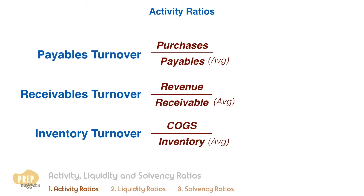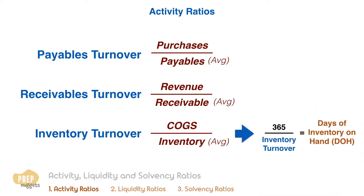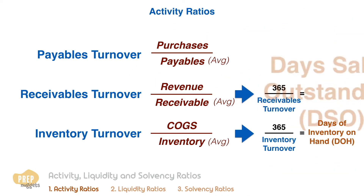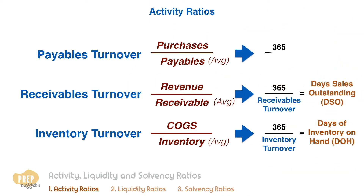Admittedly, these ratios by themselves are hard to interpret. The more common application is to invert them and multiply by 365. This gives us the days of inventory on hand, days of sales outstanding, and number of days of payables respectively.